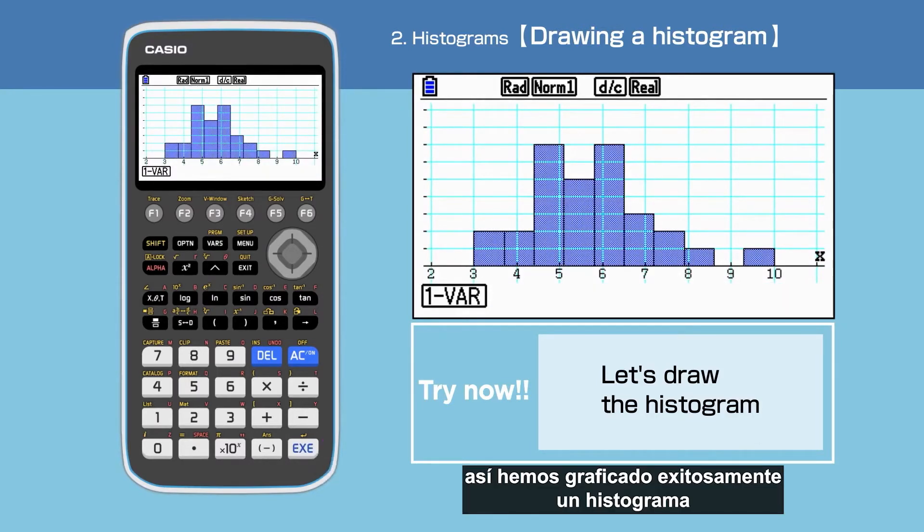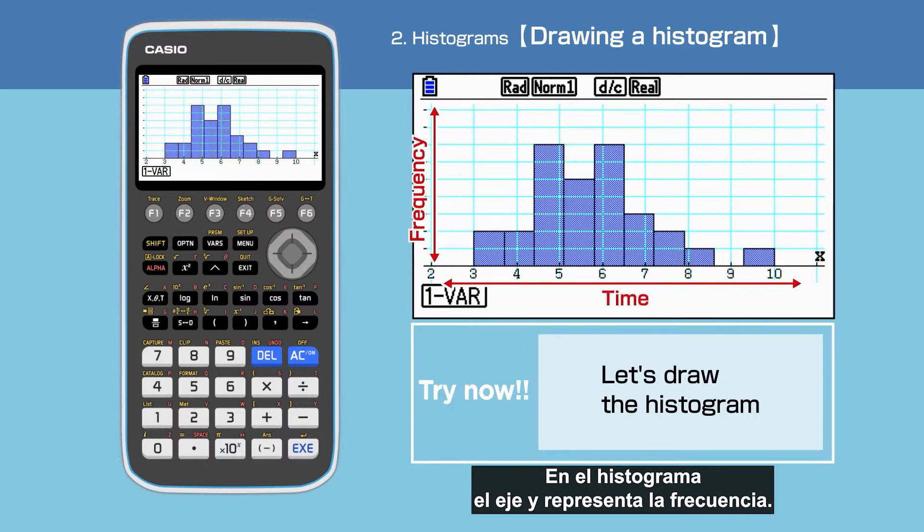We have successfully drawn the histogram for the battery life for Company A. On the histogram, the Y axis represents Frequency.